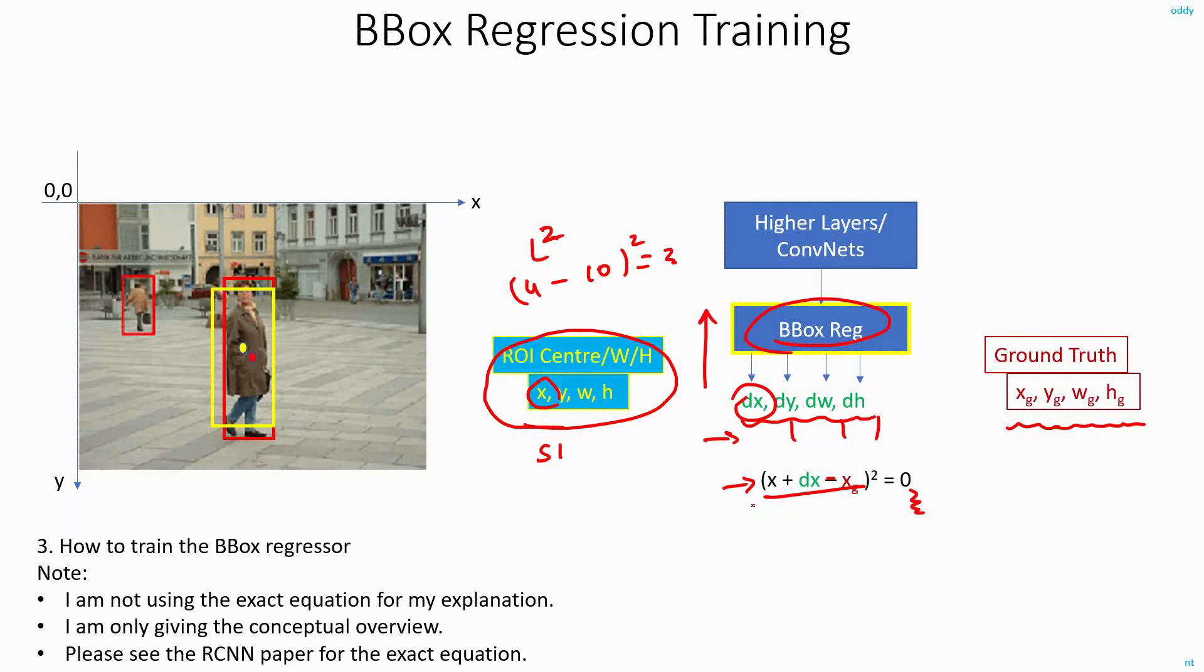So in the next iteration, you again calculate these values. You go on doing this, repeating this step until the loss will be zero or very close to zero. Then you can consider your bounding box to have been trained.